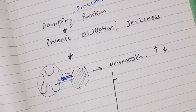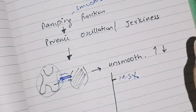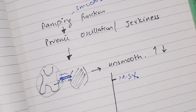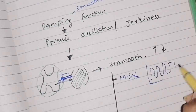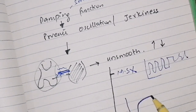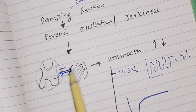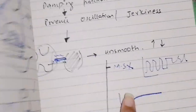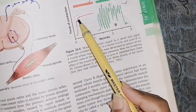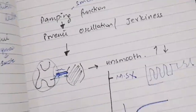The damping function means that even though input signals from the spinal cord may vary in intensity — sometimes higher, sometimes lower — the muscle spindle ensures contraction is maintained at a constant level. For example, when carrying a weight, the contraction of the muscles does not fluctuate but stays smooth. If the muscle spindle is intact, contraction will be smooth; if removed, it will vary with the input signals.